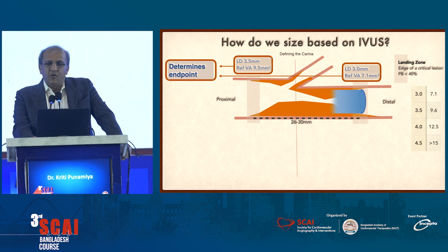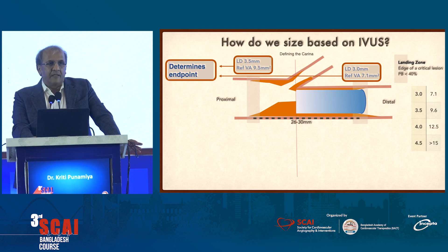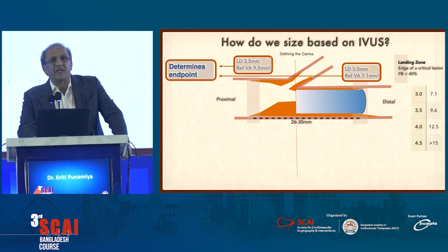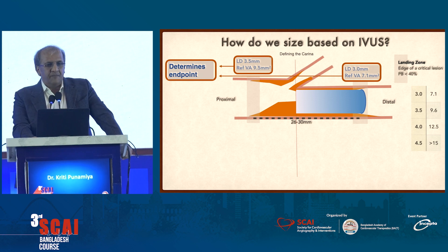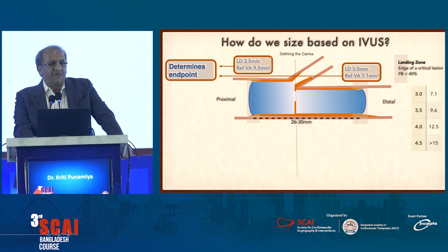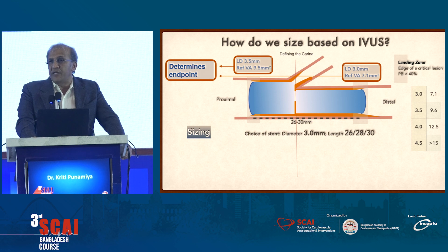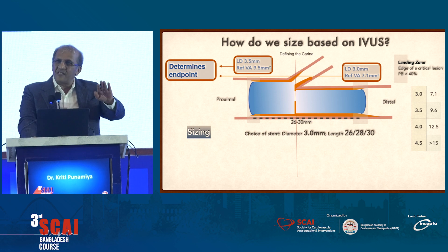Once we realize this, we know that the distal part of this stent will have to be expanded in relationship with the reference vessel distal to it, which happens to be 3. So all the blue shadow will have to be 7.1 mm² or thereabouts. Approximately it will have to be 9.5, because it's a 3.5 vessel. If you size it to the distal branch, then the size is constant — it's 3.0.